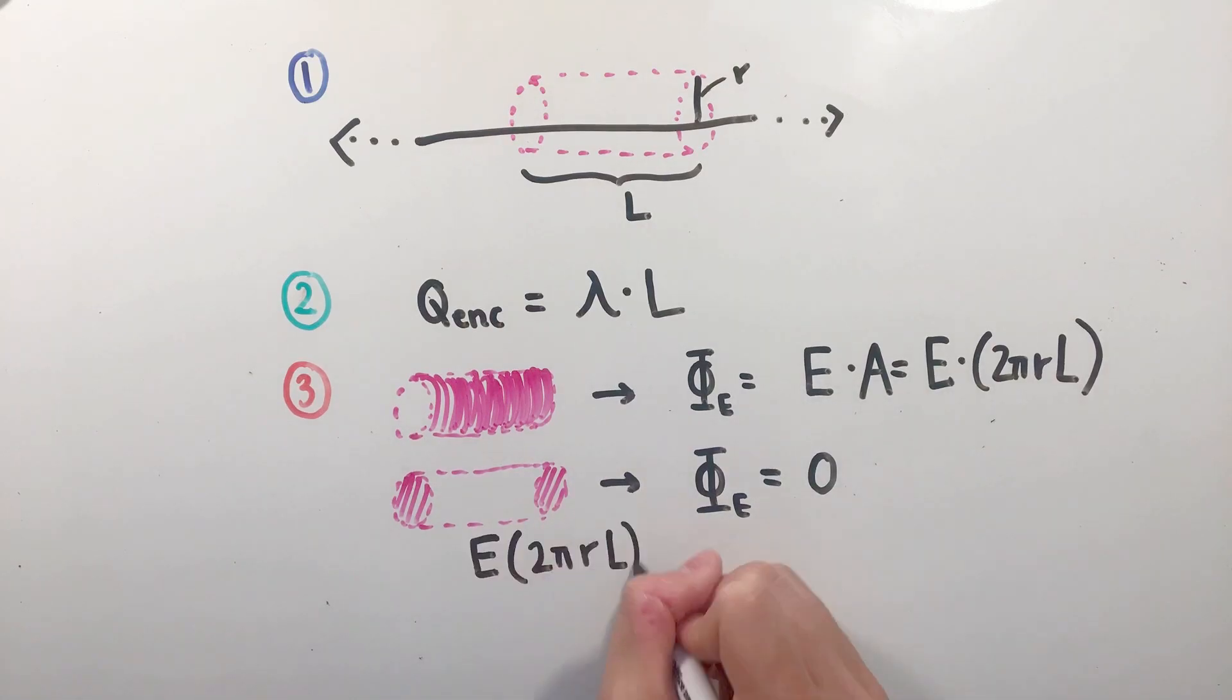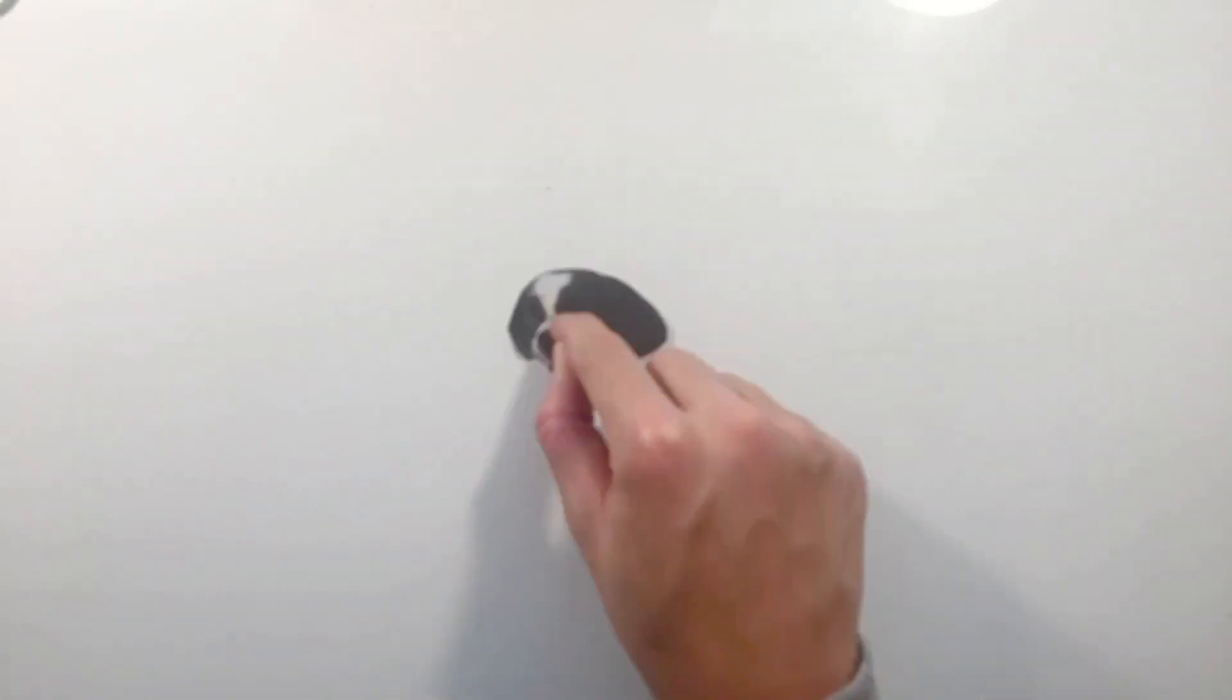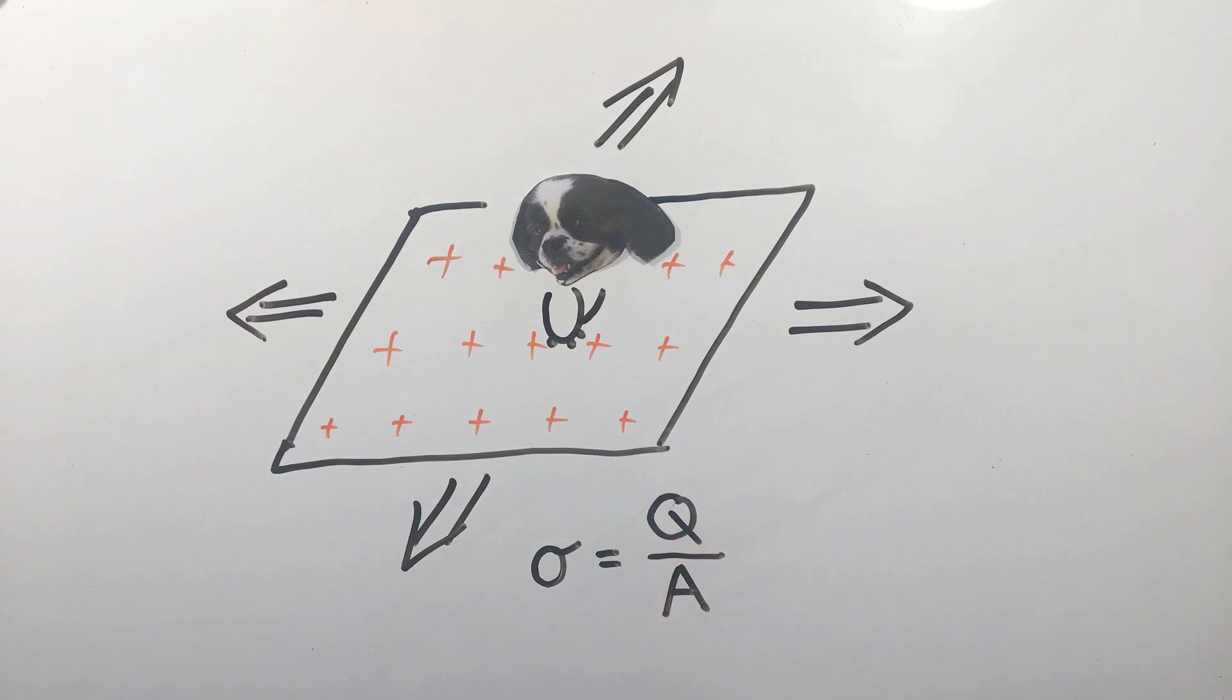Finally, putting all of these components together and noticing that our length of the cylinder actually cancels out, we can simply solve for the electric field due to an infinite line of uniform charge. Now, another common geometry you may see is an infinite plane of charge with uniform surface density sigma.